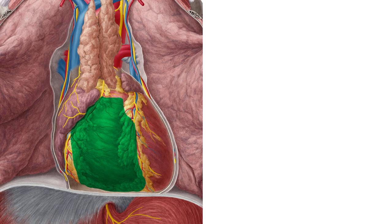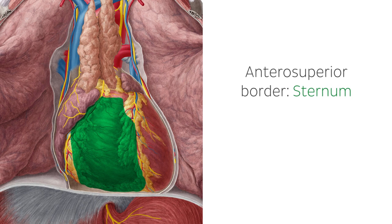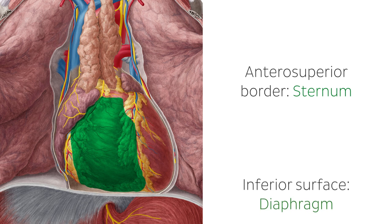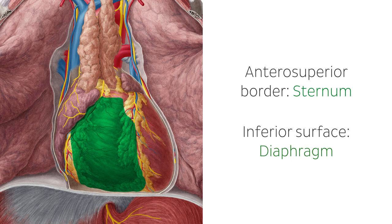It is bordered anterosuperiorly by the sternum, and this circular convex area majorly contributes to the sternocostal surface of the heart. The inferior surface is situated upon the diaphragm, and this small flat area makes up part of the diaphragmatic portion of the heart.